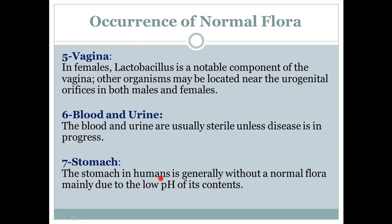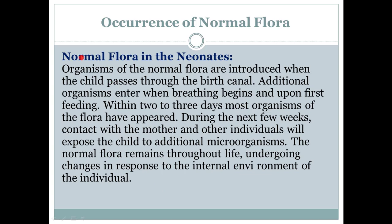Next is the stomach. The stomach in humans is generally without a normal flora, mainly due to the low pH of its contents. Our stomach generally has no normal flora, and this is because the pH of our stomach is low — low pH means highly acidic. Because of being acidic, no organism can survive there, which is why no normal flora is present.